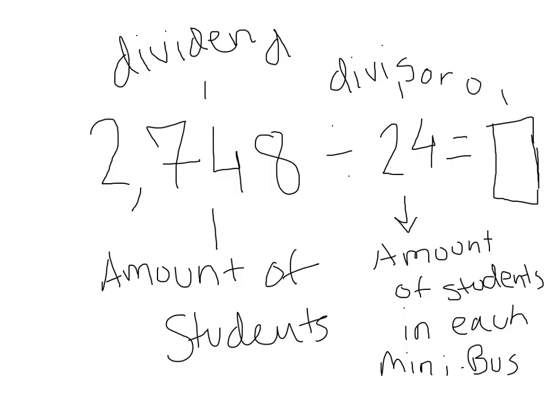This is the quotient, and this is the amount of buses. So the dividend is the amount of students, the divisor is the amount of students in each minibus, and the quotient, which is the answer, is the amount of buses.